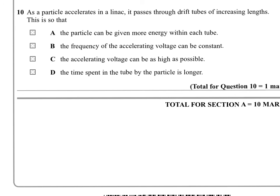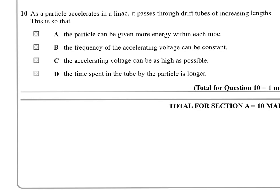Particle can be given more energy within each tube. Particles are not given energy within each tube, they coast at steady velocity in the tube. It's only between the tubes that they get an acceleration. Let's have a look at C then, the accelerating voltage can be as high as possible. That's not why we make the tubes longer.